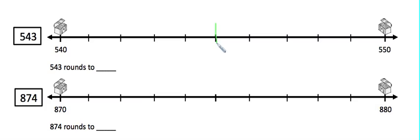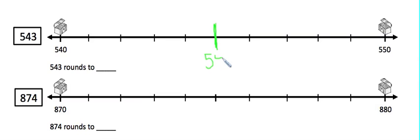I'm going to mark it here in the middle on my number line, and then figure out what that number would be. So here's 540, 541, 542, 543, 544, and 545. So that's our midpoint in between 540 and 550.